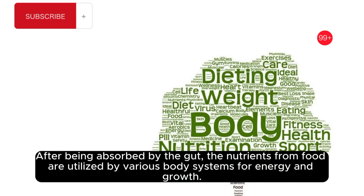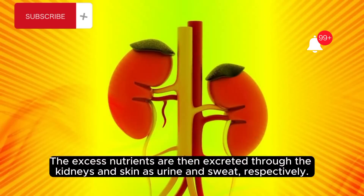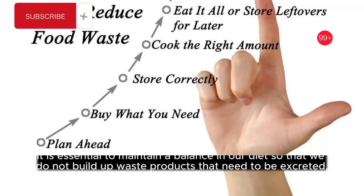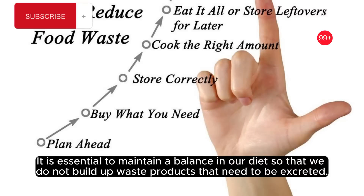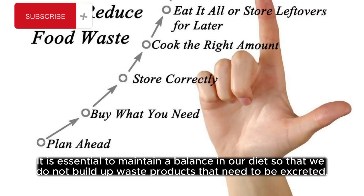After being absorbed by the gut, the nutrients from food are utilized by various body systems for energy and growth. The excess nutrients are then excreted through the kidneys and skin as urine and sweat, respectively. It is essential to maintain a balance in our diet so that we do not build up waste products that need to be excreted.